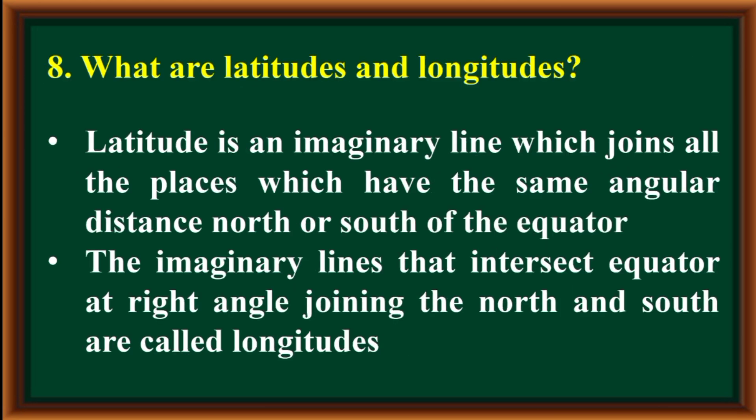What are latitudes and longitudes? Latitude is an imaginary line which joins all the places that have the same angular distance north or south of the equator. The imaginary lines that intersect the equator at right angles, joining the north and south poles, are called longitudes.